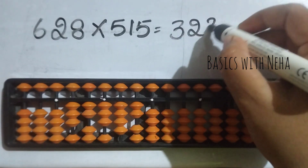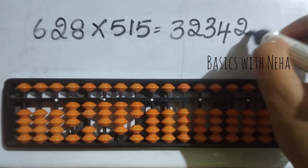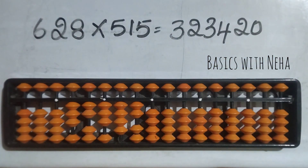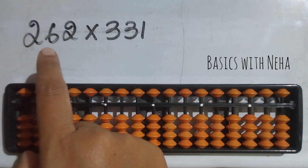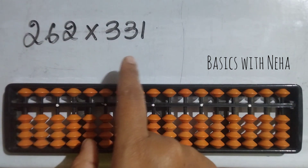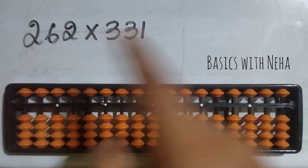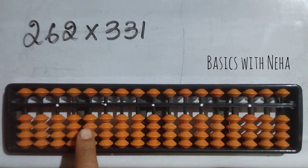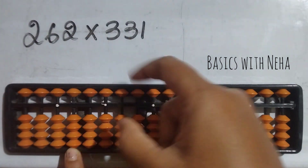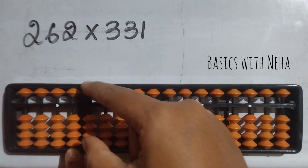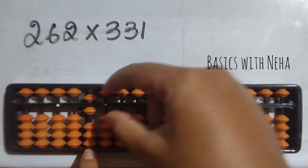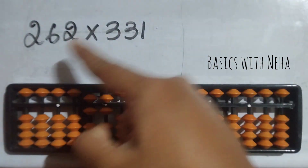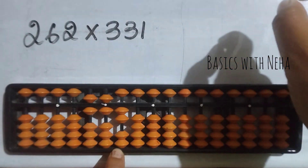The fourth question: 262 into 331. Six numbers — start from the sixth rod. 2 threes are 6 — zero six. 2 threes are 6 — zero six. 2 ones are 2 — zero two.